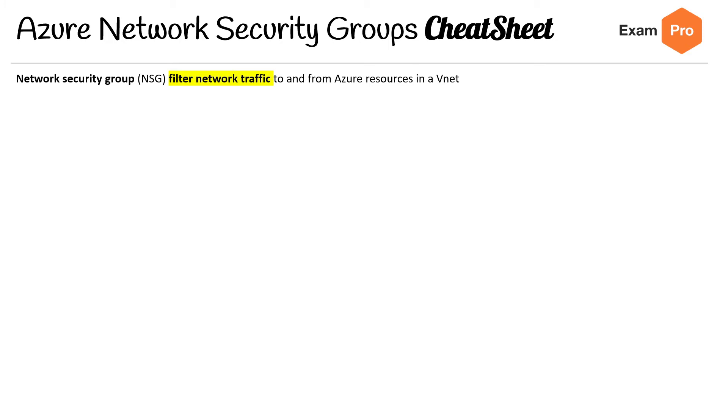Hey, this is Andrew Brown from ExamPro. We're looking at the Azure Network Security Group cheat sheet. NSGs filter network traffic to and from Azure resources in a VNet.